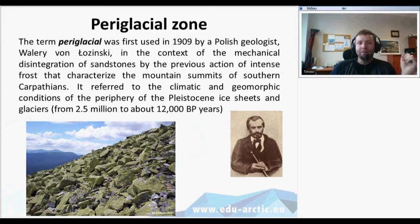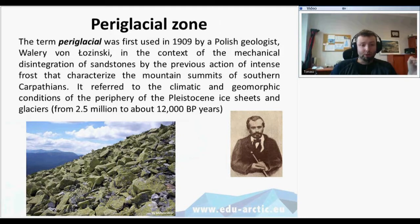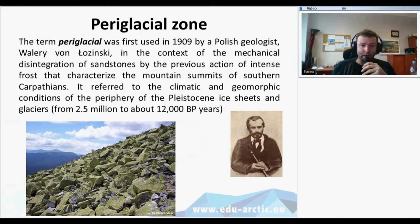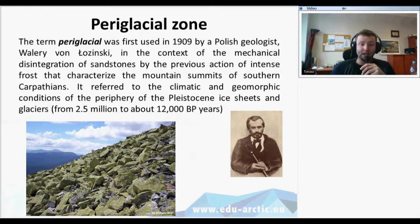We should remember about the periglacial zone that was introduced by Polish geologist Walery Łoziński, in the context of the mechanical disintegration of sandstones by the previous action of intense frost that characterized the mountain summits of the southern Carpathians. In these mountains you can see those huge blocks of rocks. Łoziński knew that these rocks were formed by different processes of freezing and thawing, and he knew this was referred to the climatic and geomorphic conditions of the periphery of Pleistocene ice sheets and glaciers — not recently, but from 2.5 million years to about 12,000 years before the present.